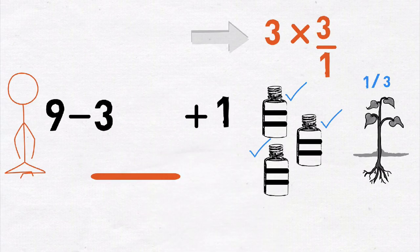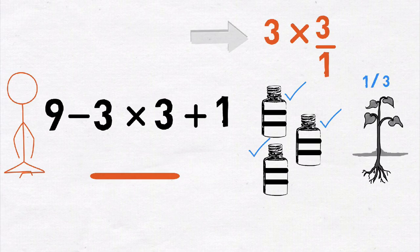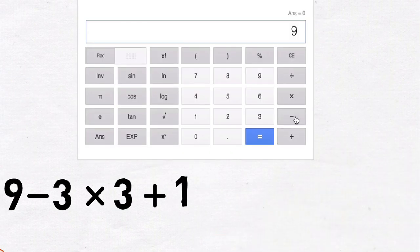Our problem thus can also be written as... Now we can easily solve this ourselves but let us feed it into the calculator. We should get the same result as previously, right? Let us check it out. We get one. This is different from our first answer which was nine.